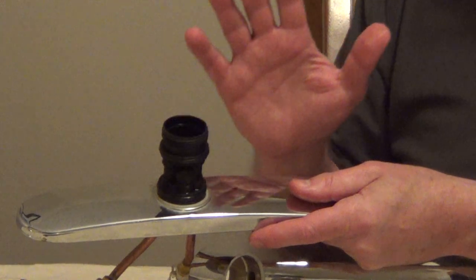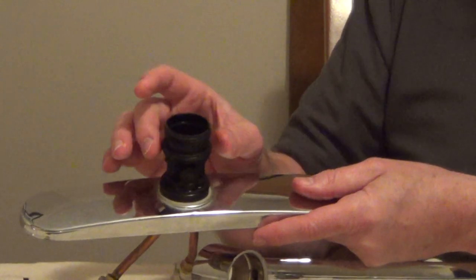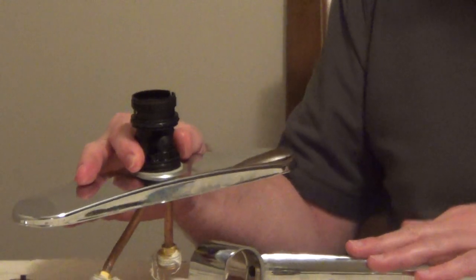Use a plumber's grease, a silicone grease. It's going to keep these lubricated and allow your spout to move easy.